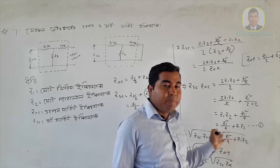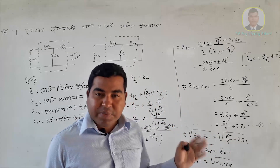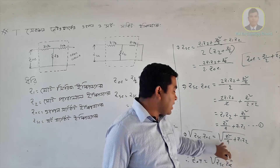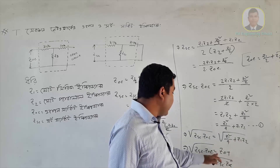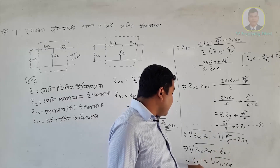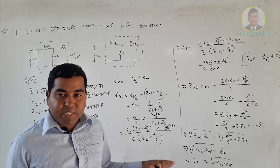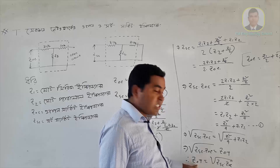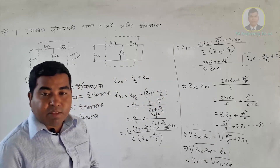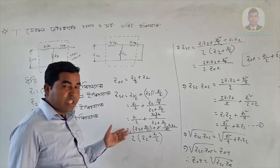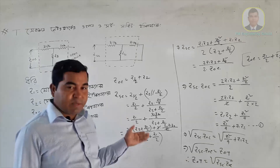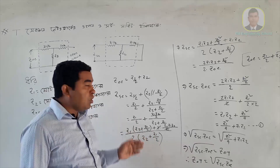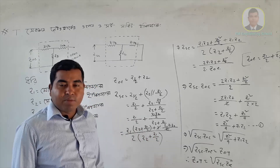We have seen the previous video on the T-section network characteristic impedance ZOT. This is ZOT — the T-section network characteristic impedance. We have a short-circuit impedance, open-circuit impedance, and T-section network characteristic impedance. So viewers, if you like this video, please like, comment, share, and subscribe to this channel. Thank you very much.